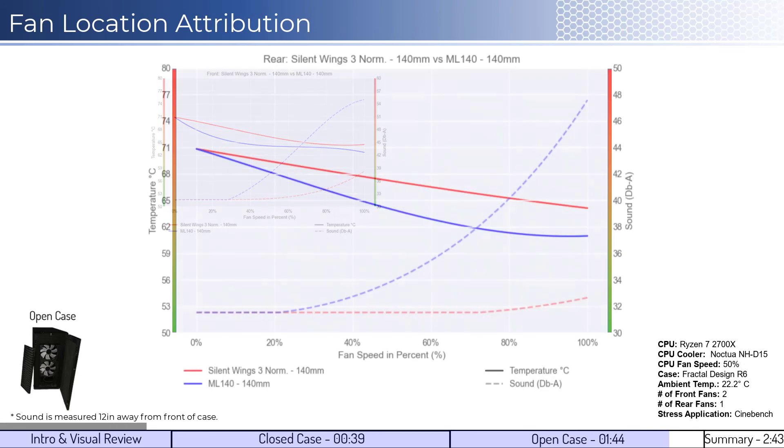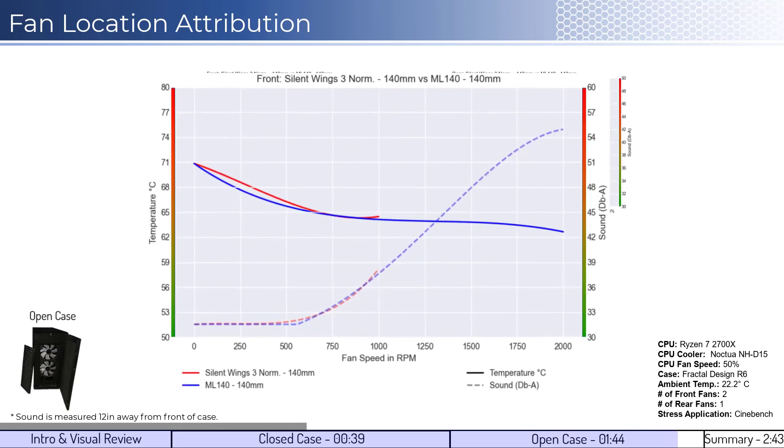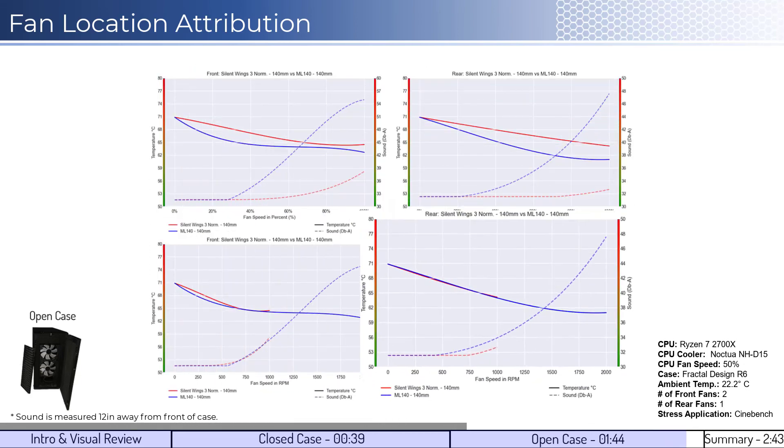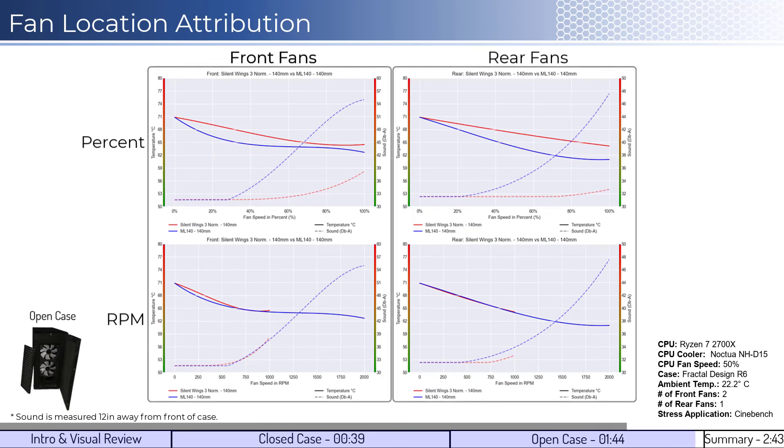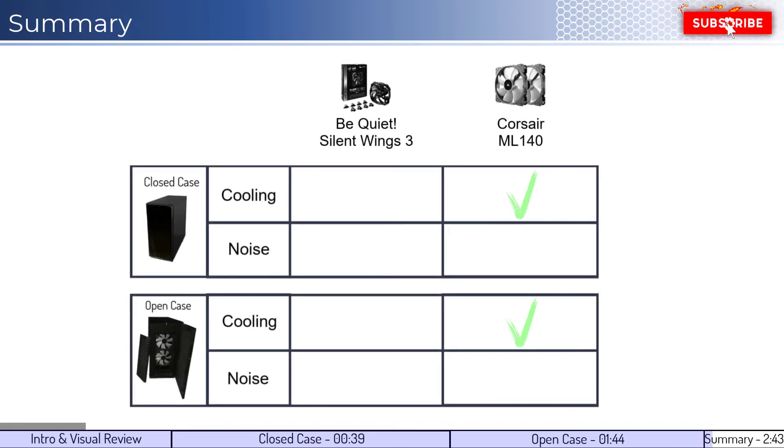When looking at the open case front and rear attribution for the fan's performance on a percent and RPM basis, we can see that the fans have similar performance noted in the all-fan compare. Overall, the ML140 fan has better cooling performance relative to the Silent Wings 3 fan.